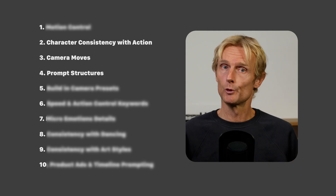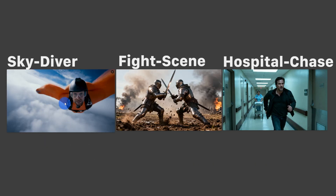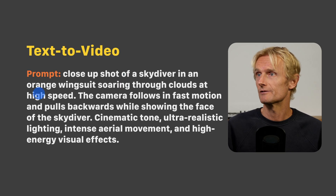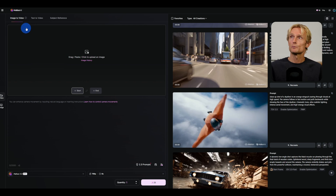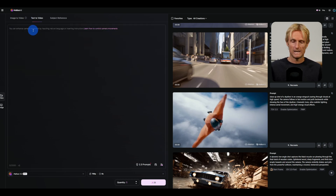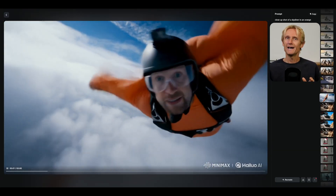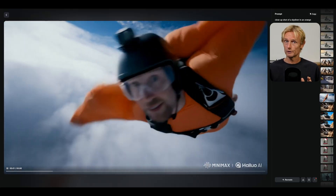Before moving on to camera moves and prompt structures, here's how consistent characters stay in action shots with HILUO 2.3, demonstrated through a skydiver video, a fight scene, and a hospital chase. For the skydiver, the text-to-video prompt used was: close-up shot of a skydiver in an orange wingsuit soaring through clouds at high speed, the camera follows in fast motion and pulls backwards while showing the face of the skydiver. Using HILUO 2.3 as the model at 768p, the result is really impressive — a level of character consistency in action scenes not seen before, not even with Kling 2.5, Sora 2, or VO 3.1.